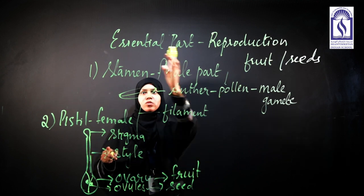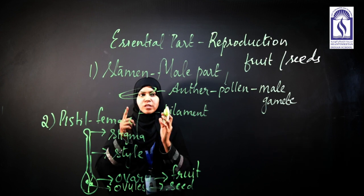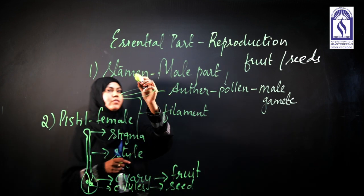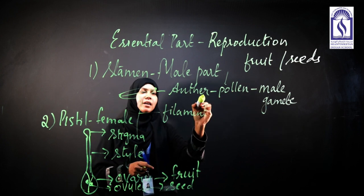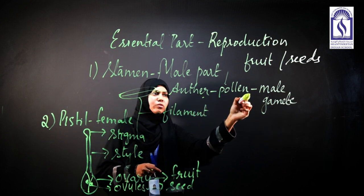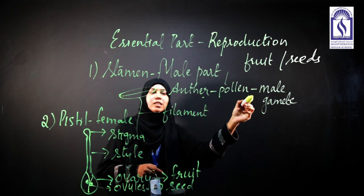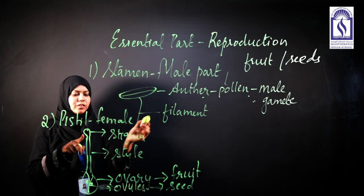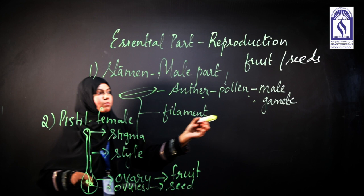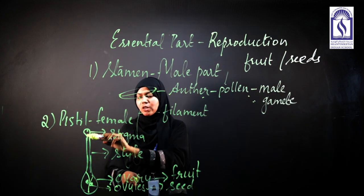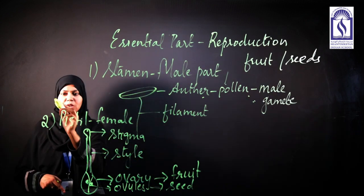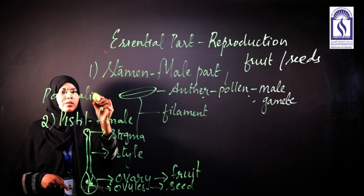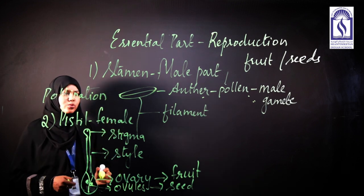Now, we were talking about the process of pollination — what is pollination? It is the first step required for the process of formation of fruit. The male gametes, produced by the anther as pollen, should be transferred to the female part of the flower — the tip of the stigma. That process of transferring the male gametes to the stigma is known as pollination, which is the first step required for the formation of fruit.